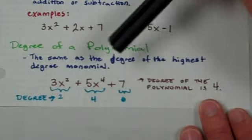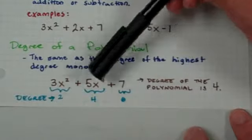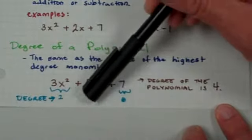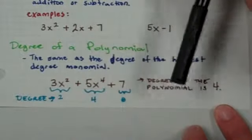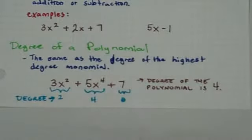Because remember it's x to the 0 is on there. Well the degree of the entire polynomial is 4. It's the degree of the highest monomial. So that's 4. You take that one and that's the degree of the whole thing. That's the degree of polynomial. And that's going to be helpful for what we're talking about next.